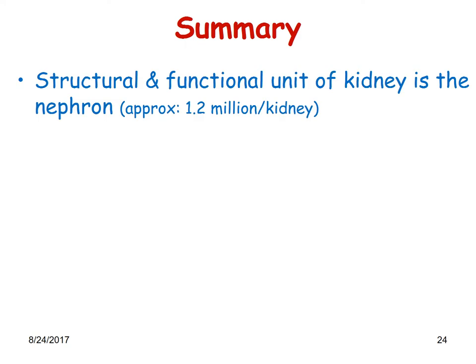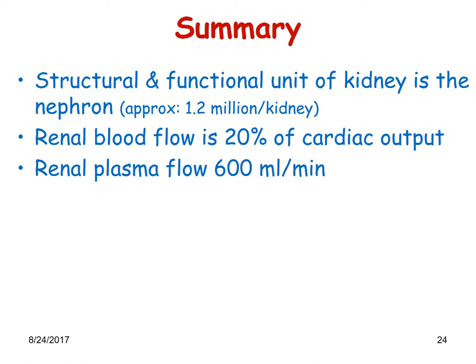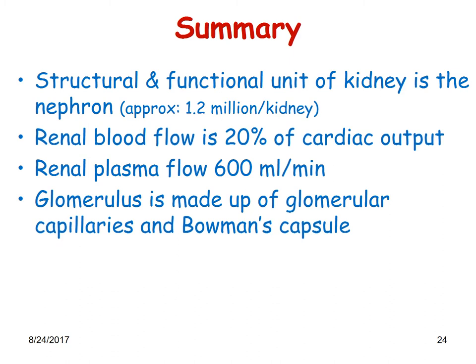In summary: the structural and functional unit of the kidney is called the nephron. Roughly around 1.2 million nephrons are present per kidney. Renal blood flow is 20 percent of the cardiac output. Renal plasma flow is around 600 milliliters per minute. The glomerulus is made up of glomerular capillaries and the Bowman's capsule together.